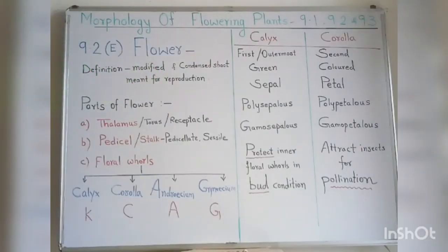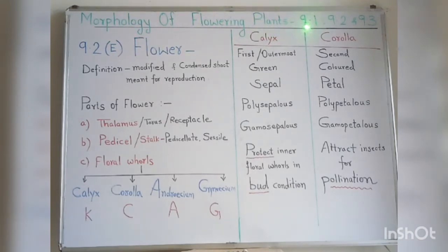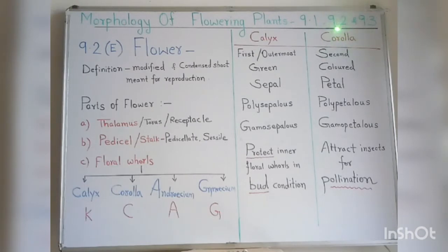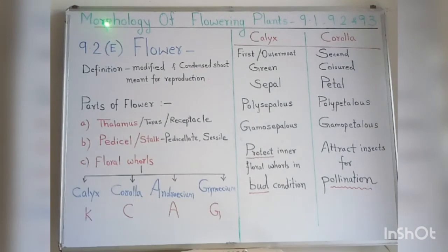Welcome to biology class. Today we'll be studying morphology of flowering plants, lesson number 9 in our textbook. This lesson has three units: 9.1, 9.2, and 9.3. Unit 9.1 is deleted. In 9.2 we'll be studying only inflorescence, flower, and seed. In 9.3 there are two families — Fabaceae and Solanaceae — and family Fabaceae is deleted. So let's start with 9.2.